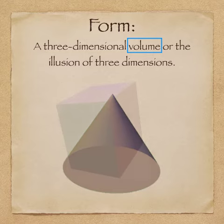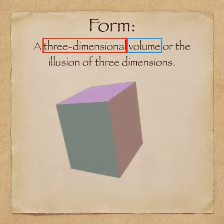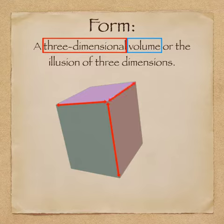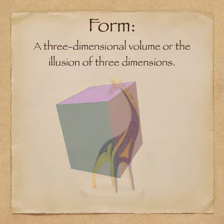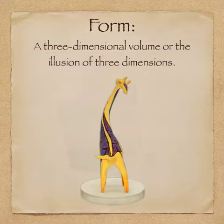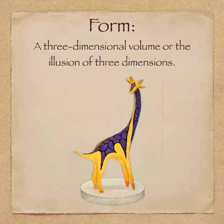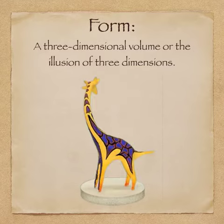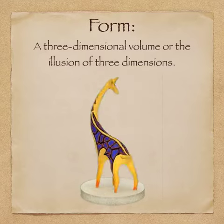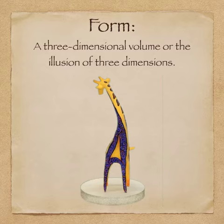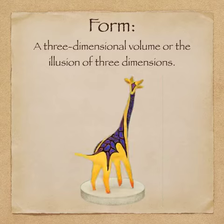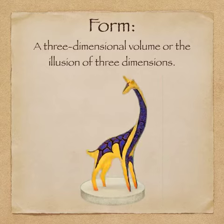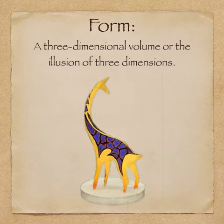So forms are containers or volumes that have three dimensions: width, height, and depth. In art, form is a term that usually relates to sculpture. That's because it's three-dimensional and has width, height, and depth. You can view it from all different sorts of angles.